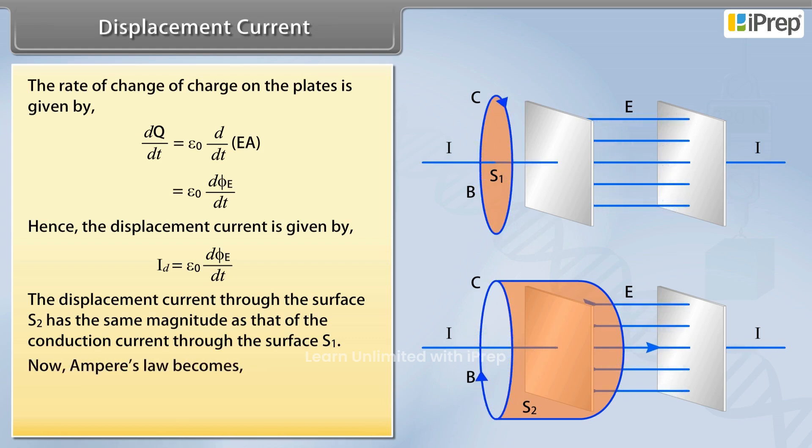Now, Ampere's law becomes closed integral of B dot DL is equal to mu naught multiplied by I plus Epsilon naught D phi E by DT.